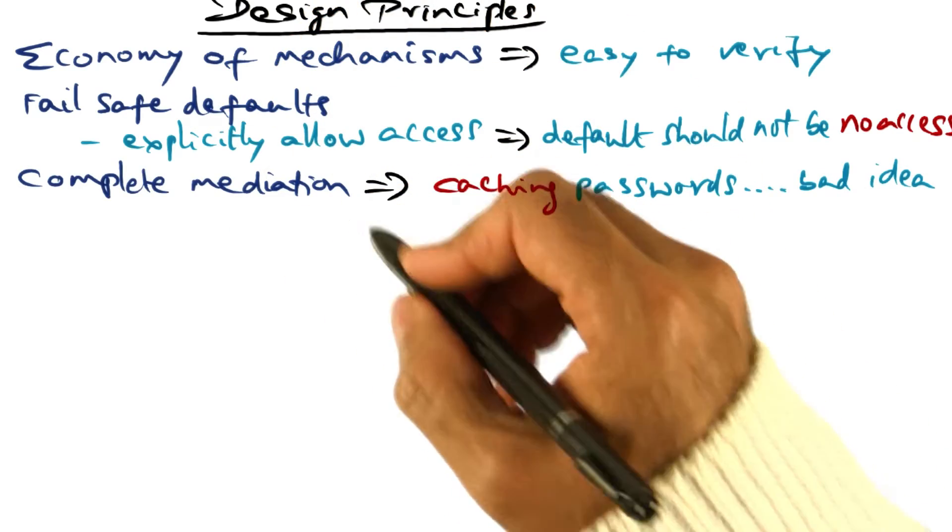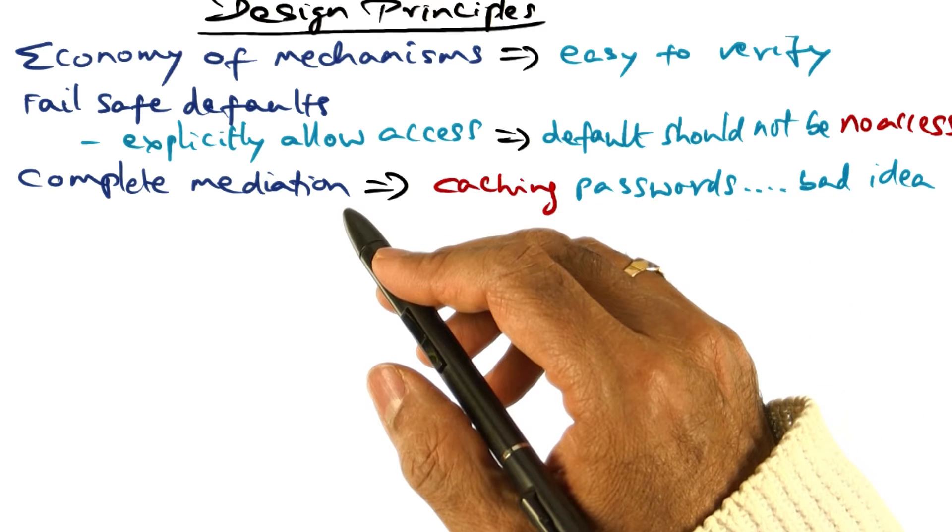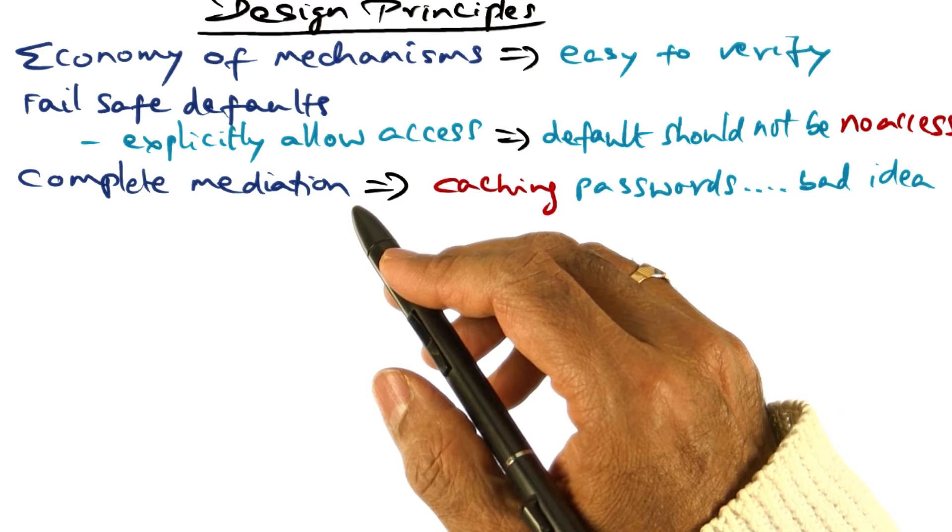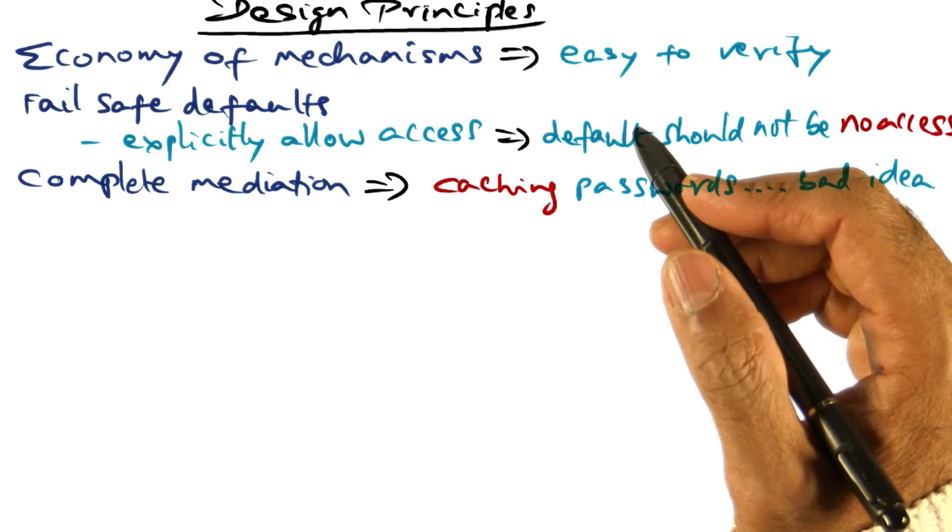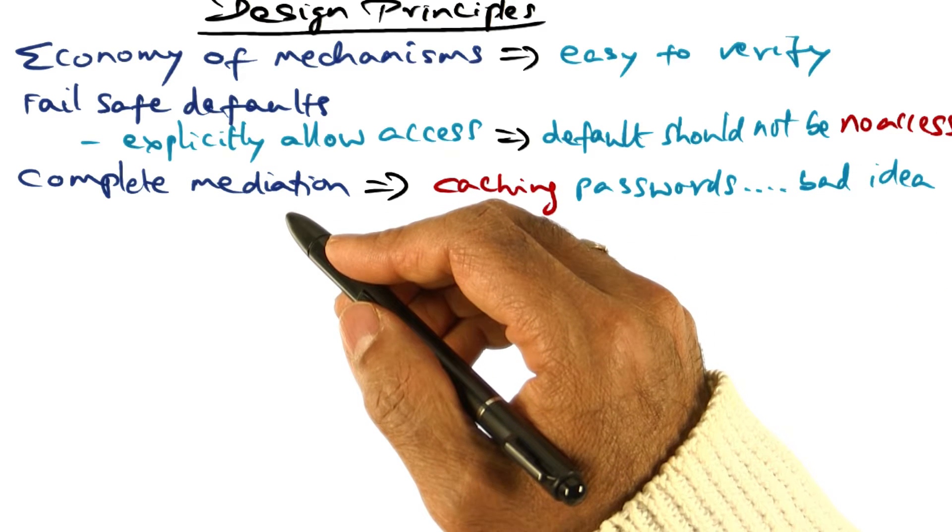The third design principle is what he calls complete mediation. And by that, what is meant is that the security mechanism should not take any shortcuts. For example, in authentication...